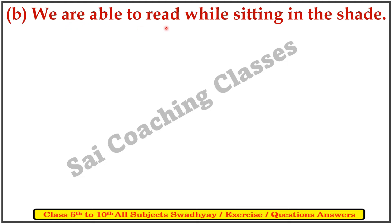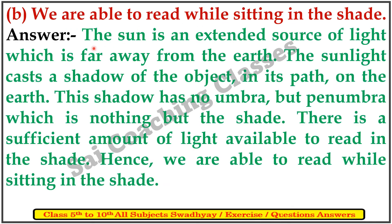B. We are able to read while sitting in the shadow. The sun is an extended source of light which is far away from the earth. The sunlight casts a shadow of the object in its path to earth. The shadow has no umbra, but penumbra, which is a partial shadow. There is a sufficient amount of light available in the penumbra to read. Hence, we are able to read while sitting in the shadow.